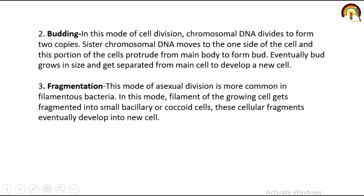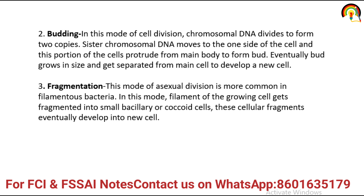The second mode of cell division is budding. In budding, chromosomal DNA divides to form two copies. First, a bud appears from the parental cell. Then there is replication of the DNA, and the replicated DNA passes from the parent cell towards the bud. The bud grows, then karyokinesis occurs followed by cytokinesis, resulting in the formation of a new cell from the parental one.